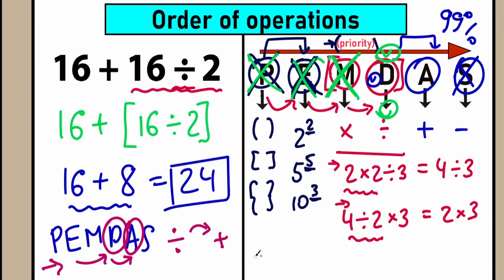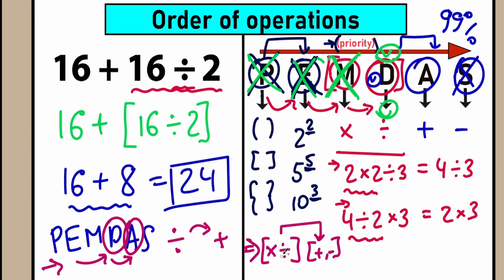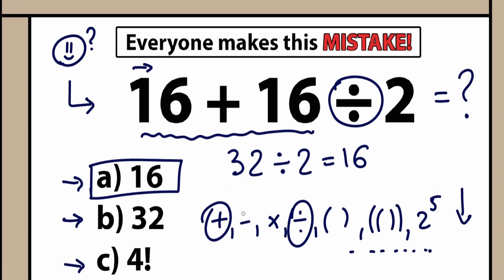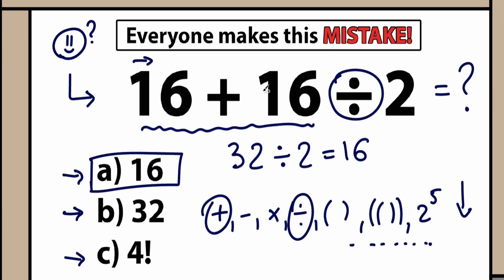Generally, in 99% of cases we need to perform multiplication and division first, and then after that group, we perform addition and subtraction. So multiplication/division is the first step, addition/subtraction is second. The correct answer is 24. The wrong approach was solving from left to right without order of operations, which gave 16.